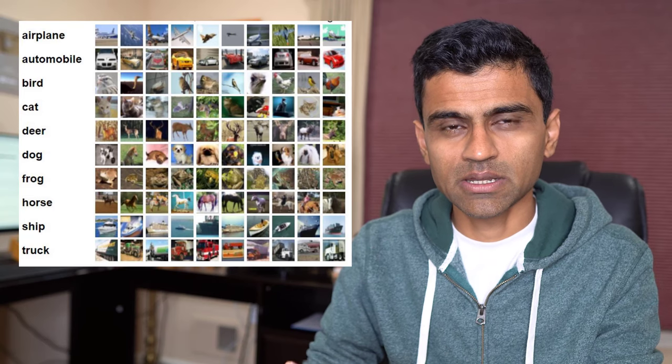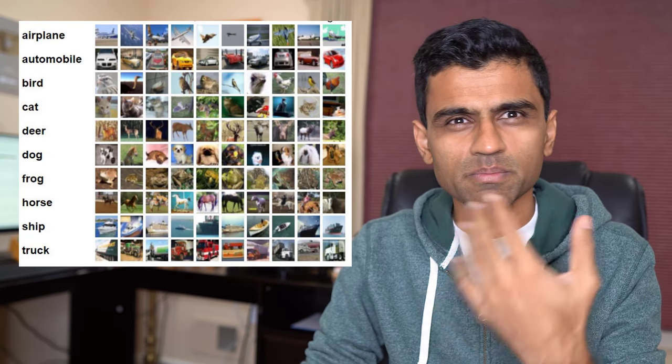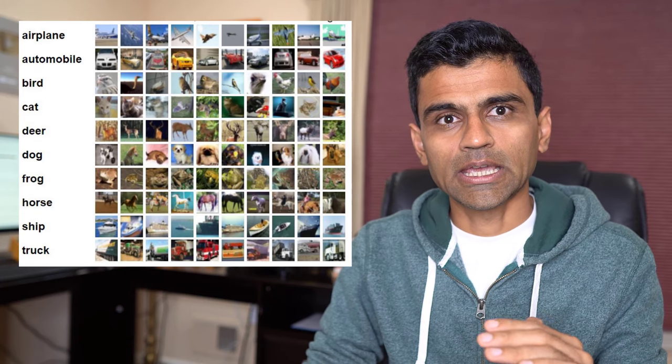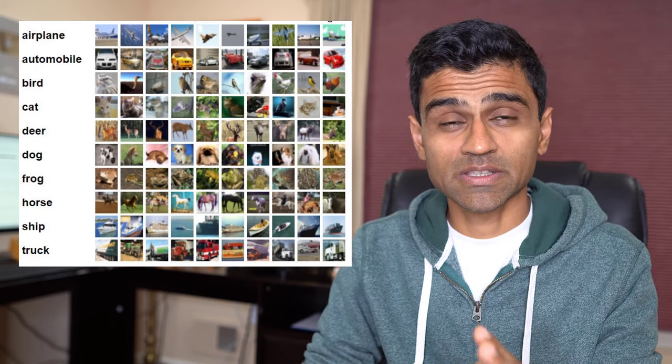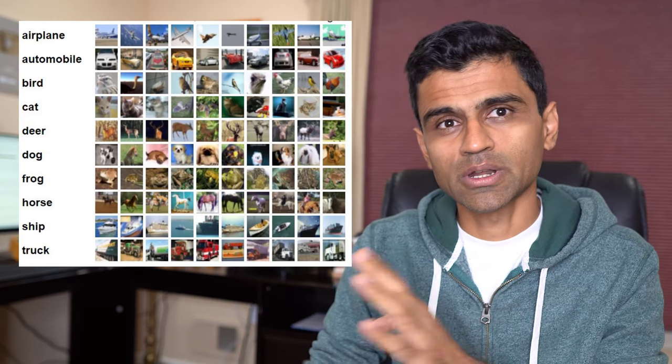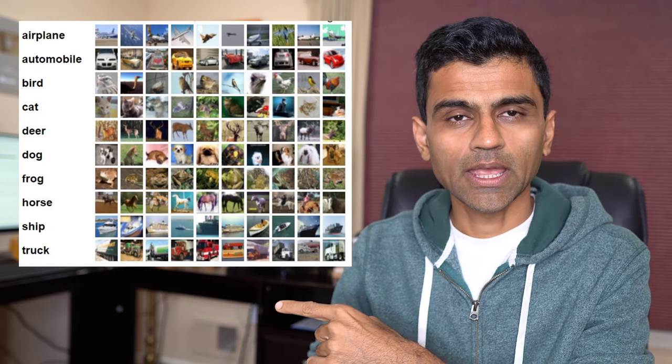In the last video we looked at what a convolutional neural network is — if you have not seen it, I highly recommend watching that before you continue. In this video today we are going to do image classification of 60,000 small images. This dataset comes from the TensorFlow library itself; it's called the CIFAR-10 database and has various objects such as aeroplane, frog, horse, etc. We will be doing image classification using a convolutional neural network.